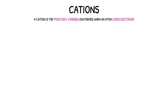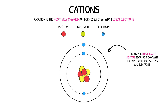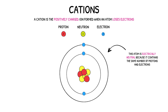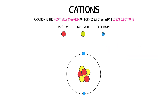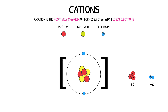A cation is the positively charged ion formed when an atom loses electrons. This atom currently has no overall charge, as there is an equal number of protons and electrons, and so the charges cancel. When this atom reacts, it will lose an electron to have a full outer shell of two electrons. With an electron lost, there is now one more positive charge than there is negative. The atom becomes a cation with an overall plus-one charge.